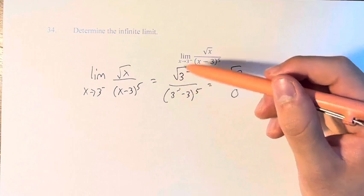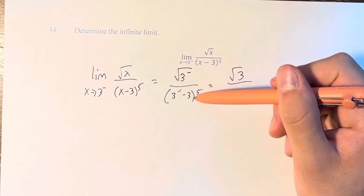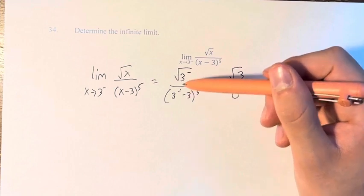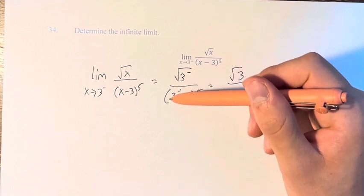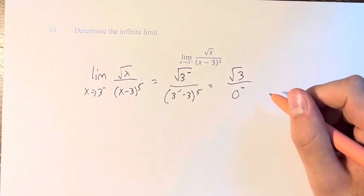We are taking a number that is slightly less than 3, and we're subtracting 3. That means this number is very, very slightly smaller, which means we are getting values that are very slightly smaller than 0.